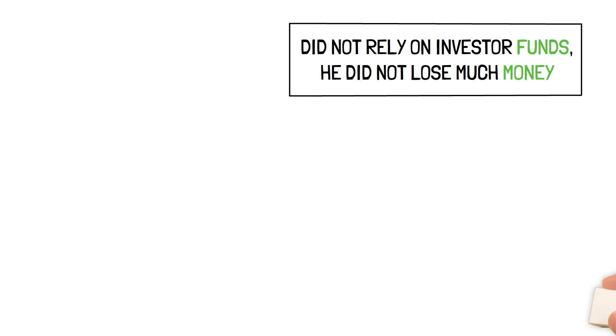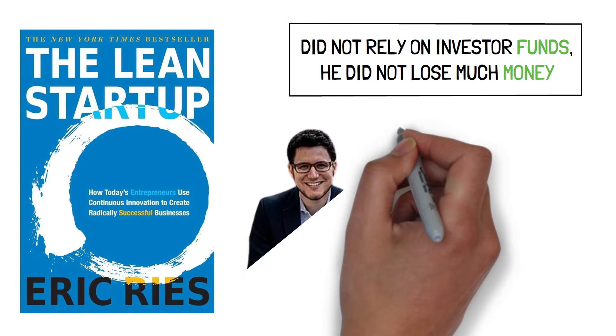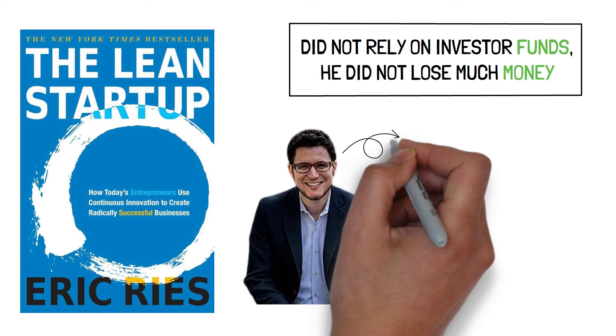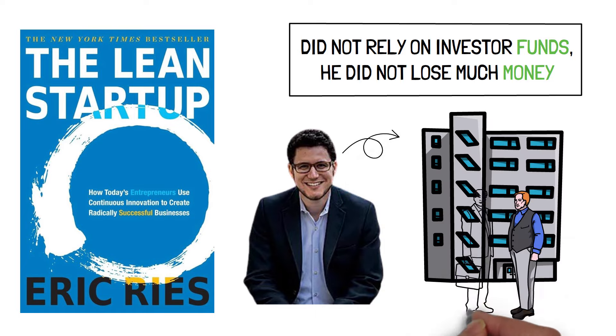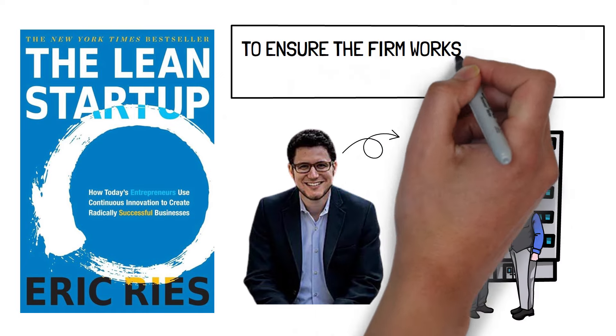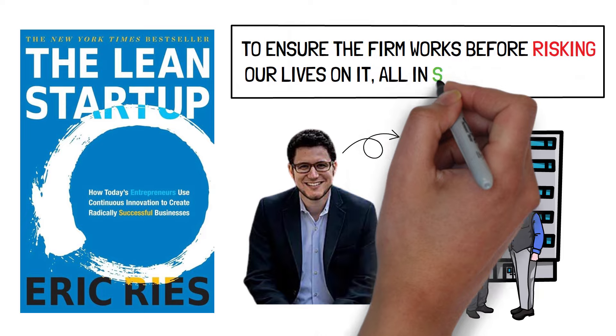In the book The Lean Startup, author Eric Ries teaches us the tactics we need to start a business in the most effective way to ensure the firm works before risking our lives on it, all in six major lessons.